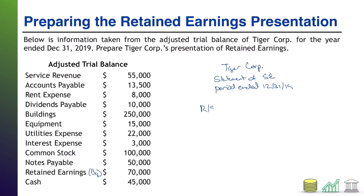The retained earnings presentation starts off with your beginning retained earnings. This is for the year ended December 31, 2019, so the beginning retained earnings came from January 1, 2019. We know from our information that that was $70,000, so I'll go ahead and enter that number now. After that, you are going to add the net income from the period. If we look at our list, there is nothing that says net income, so that's going to be a number that requires a little work on our part.